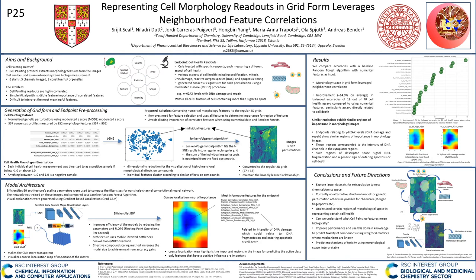The Jonker-Volgenant algorithm is used to fit these results into a rectangular grid by optimizing a cost matrix. These matrices are then trained using the EfficientNet B0 architecture. Using gradient-based localization, we generate a coarse localization map representing regions of importance in these images for each true positive sample in the test set. We observe a mean 14% improvement in balanced accuracy in 19 out of 70 cell health assays, particularly in ones related to mechanisms of cell death. We also see that similar endpoints such as those related to DNA damage show similar regions of importance, particularly in intensity of DNA in cytoplasm channels—these features could signify DNA fragmentation. In future, we will try to work with larger datasets to explore new perturbation space and predict mechanism of action of compounds using cell painting screens. Thank you.